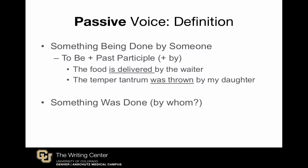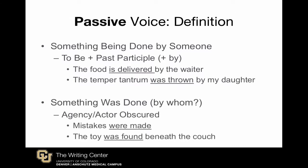The passive voice also occurs when something was done, but it's not clear who did it. The doer of the action is missing or obscured, as in these examples: 'Mistakes were made,' and 'The toy was found.' In these sentences, actions are happening, but no one is clearly acting.